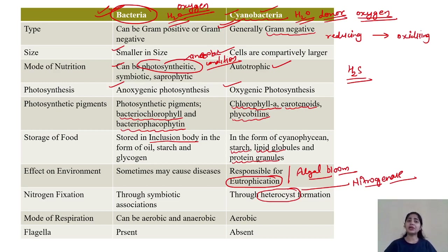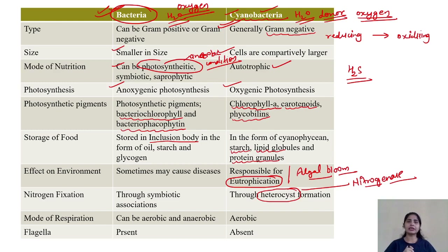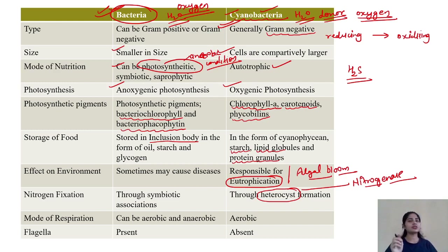This is a major difference between bacteria and cyanobacteria. If bacteria need nitrogen, they show a symbiotic association. But in the case of cyanobacteria, they form specific heterocyst cells. You can see the formation of heterocyst cells in cyanobacteria filaments, where many vegetative cells modify into heterocyst cells.